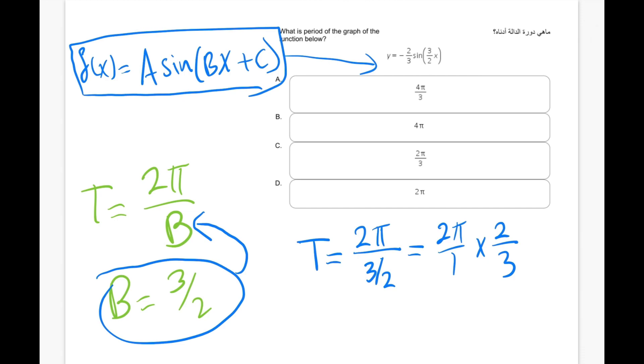If you're dividing fractions, 2π over 1 divided by 3 over 2, you're going to flip it. You're going to say 2π over 1 times 2 over 3. In this case, simplifying the answer, we end up having 4π over 3, which is the period. So the final answer is 4π over 3.